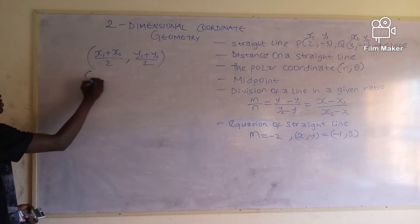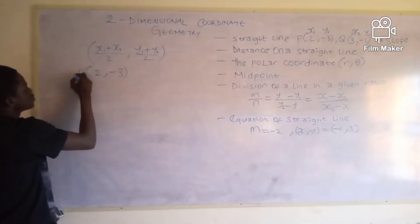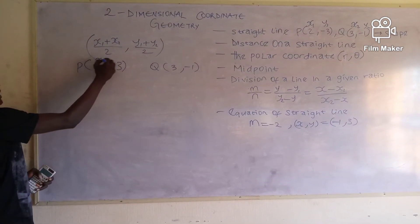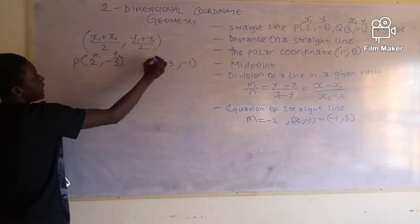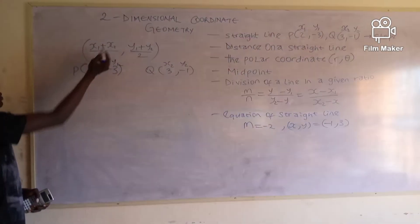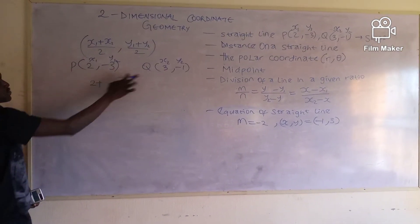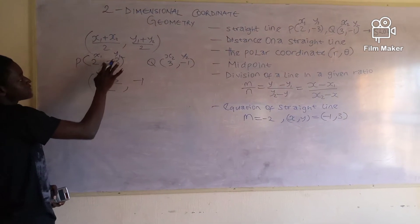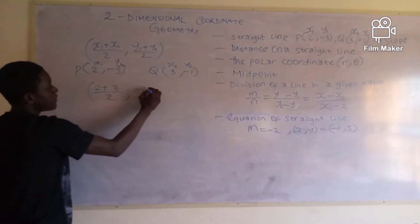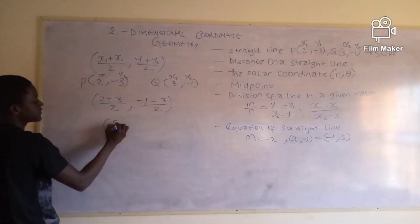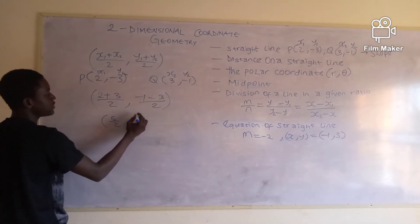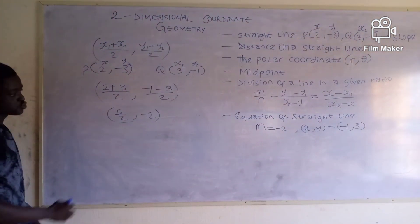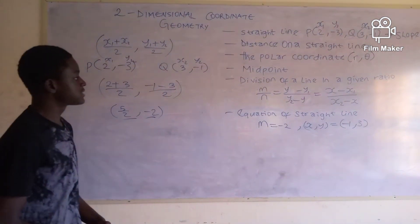Let's say P = (2, -3) and Q = (3, -1). Setting x1 = 2, y1 = -3, x2 = 3, y2 = -1 and putting into the midpoint formula: x = (2 + 3) / 2 = 5/2, y = (-3 + (-1)) / 2 = -4 / 2 = -2. So the midpoint divides that line at (5/2, -2).